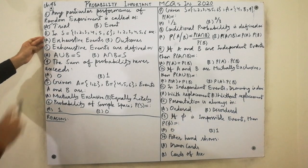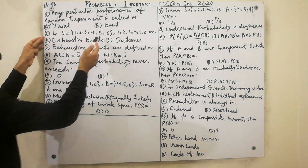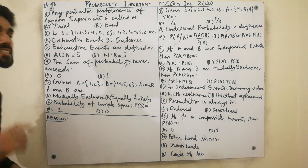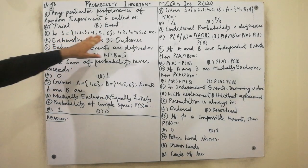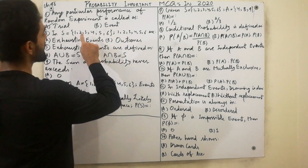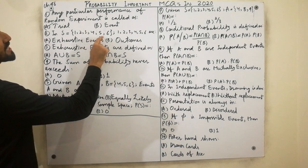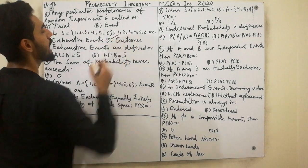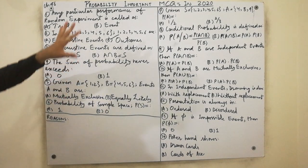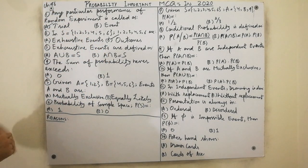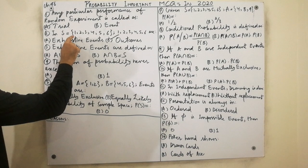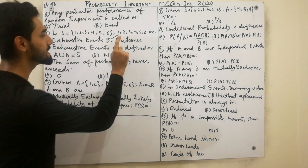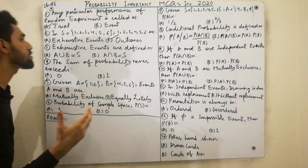The second MCQ: sample space is equal to — for one dice the sample space is {1, 2, 3, 4, 5, 6}. Must remember this key point: the numbers 1, 2, 3, 4, 5, 6 are called outcomes. You can also say they are called sample points.